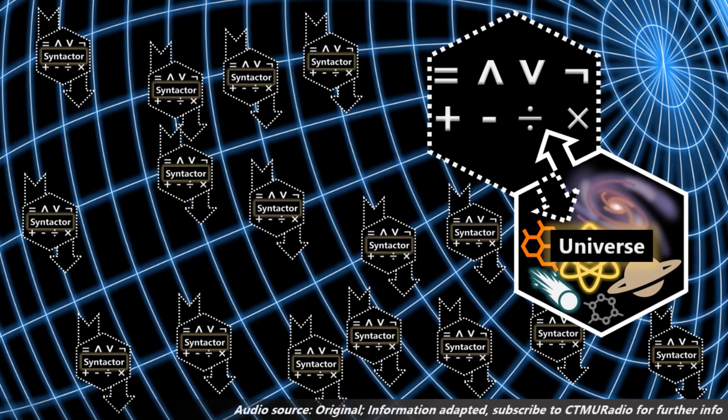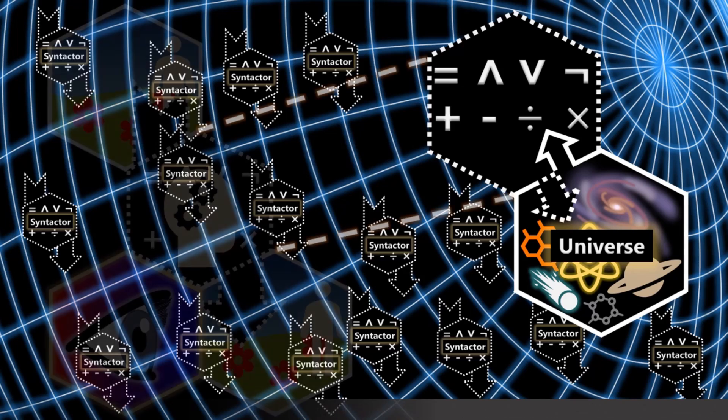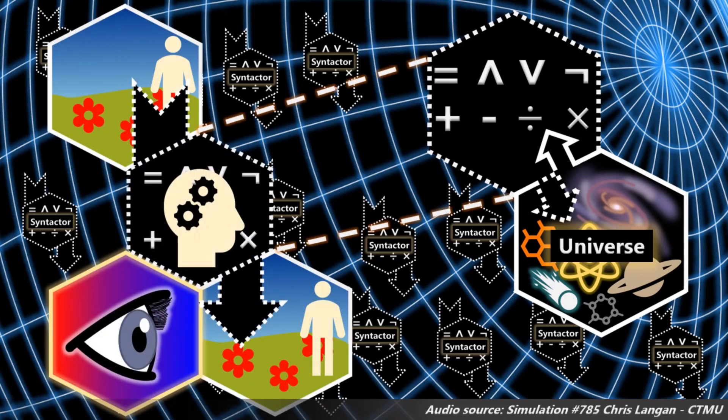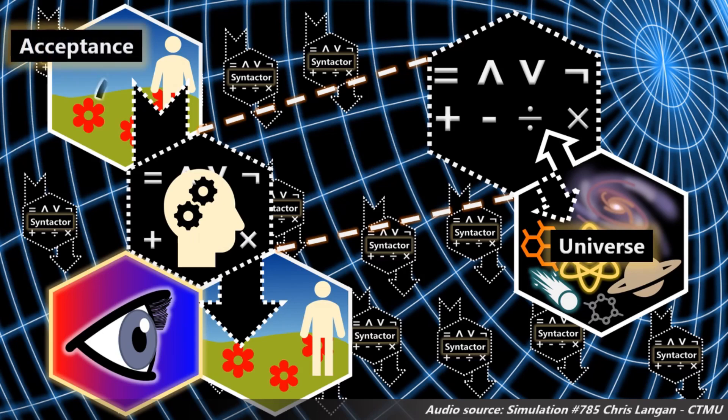Those syntactors are distributed throughout reality and their syntactic distribution forms the medium of existence. In the CTMU, points are defined in terms of states that are syntactors that actually have this input-output capacity. And the input capacity is the sensing capacity. That's what makes it a sensor.